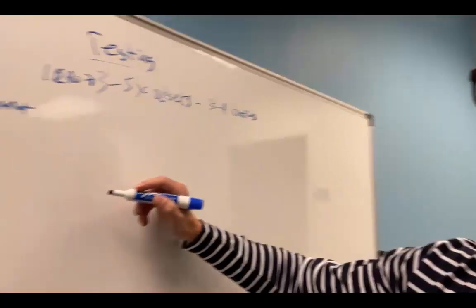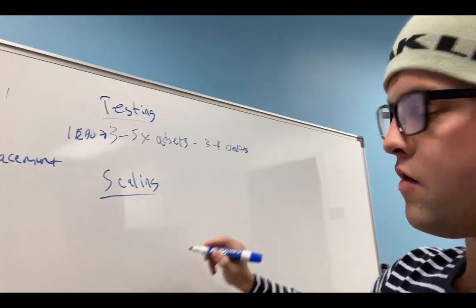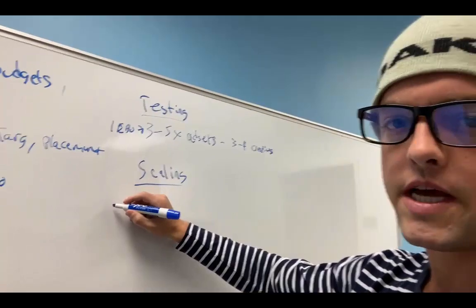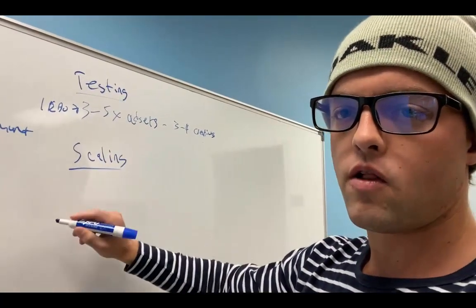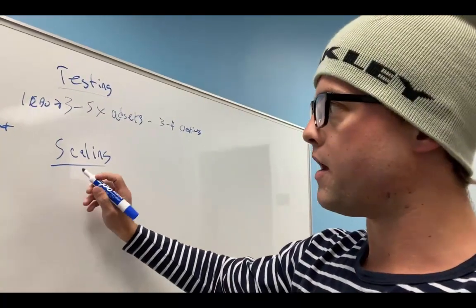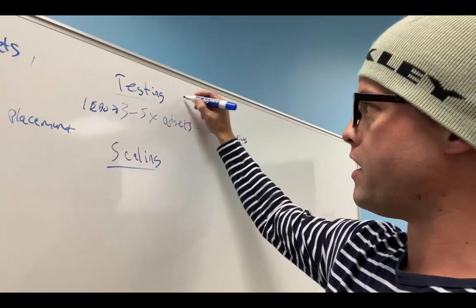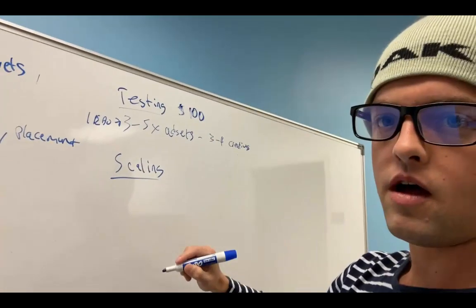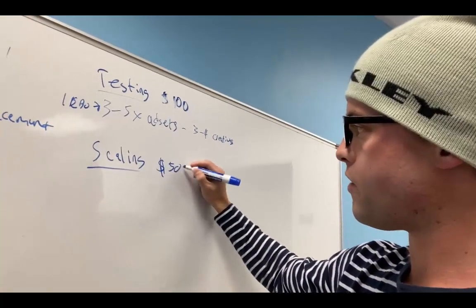Once you find something that performs well, we use a different campaign structure for scaling. For scaling, we take whatever our best ad set was from the testing campaign and single it out in its own CBO campaign. While a testing campaign might only have a $100 a day budget, a scaling campaign might have a much higher budget, like $500 a day.